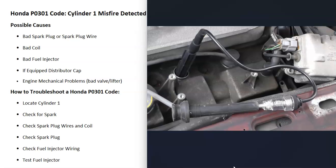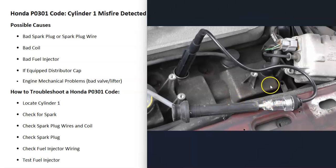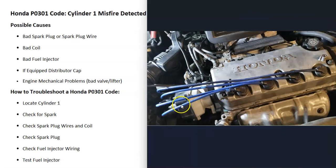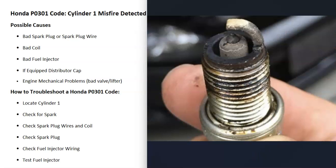Once you locate cylinder number one, one of the first things to do is check for spark and be sure you're getting spark at that cylinder. One way I like to do it is using a spark test tool — these are very low cost, less than ten dollars on Amazon or eBay. One side goes to the spark plug and the other side goes to the spark plug wire or ignition coil. You start the engine, and if you're getting spark you'll see a little spark happening inside. If there's no spark, you won't see anything.